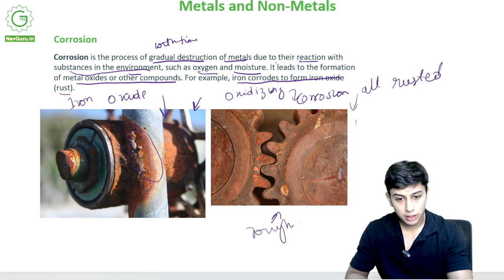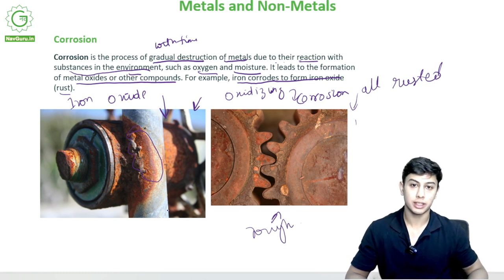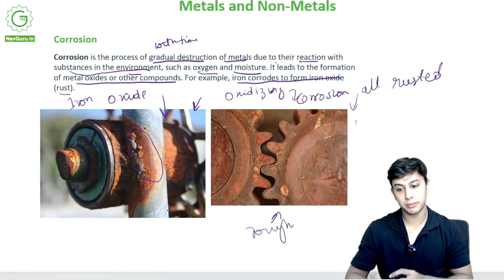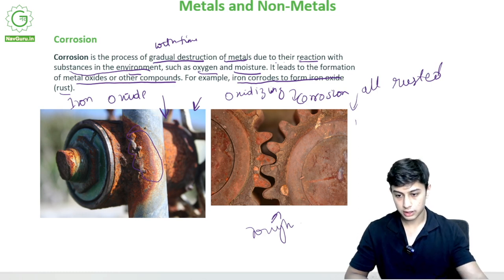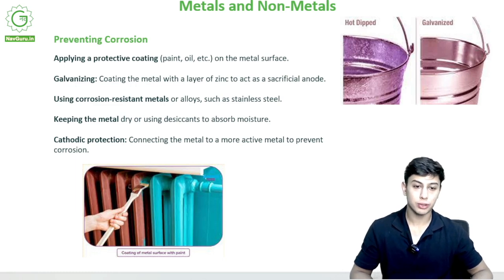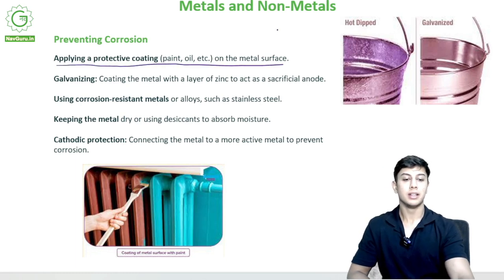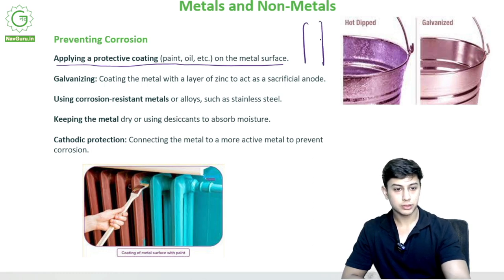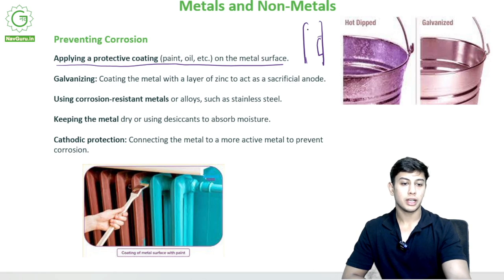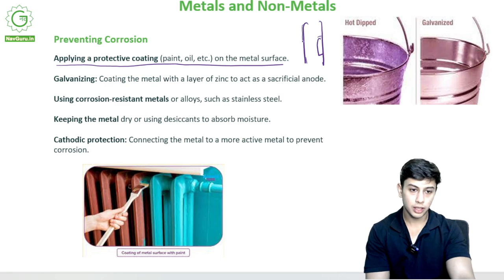You can see this pipe undergoing rust. If you get a cut from something rusting, you might need a tetanus shot — otherwise that area could get paralyzed. To prevent corrosion, you can apply a protective coating on the metal surface: a thin layer of paint or oil acts as a coating so that air and water do not reach and harm the metal inside.